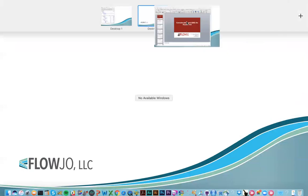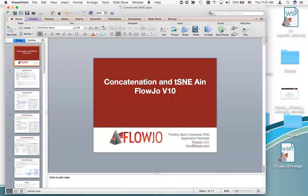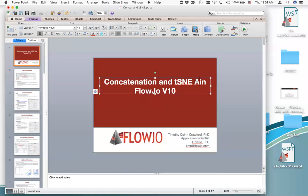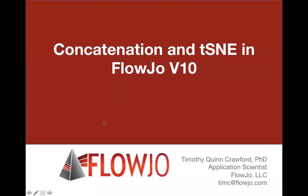What we're going to do today is go through the process of concatenating and running dimensionality reduction using the t-stochastic neighbor embedding t-SNE algorithm in Flojo version 10. I'll go through the process via a slide deck explaining the step by step, and then we'll jump back and forth to an actual Flojo workspace where I'll do the process live.